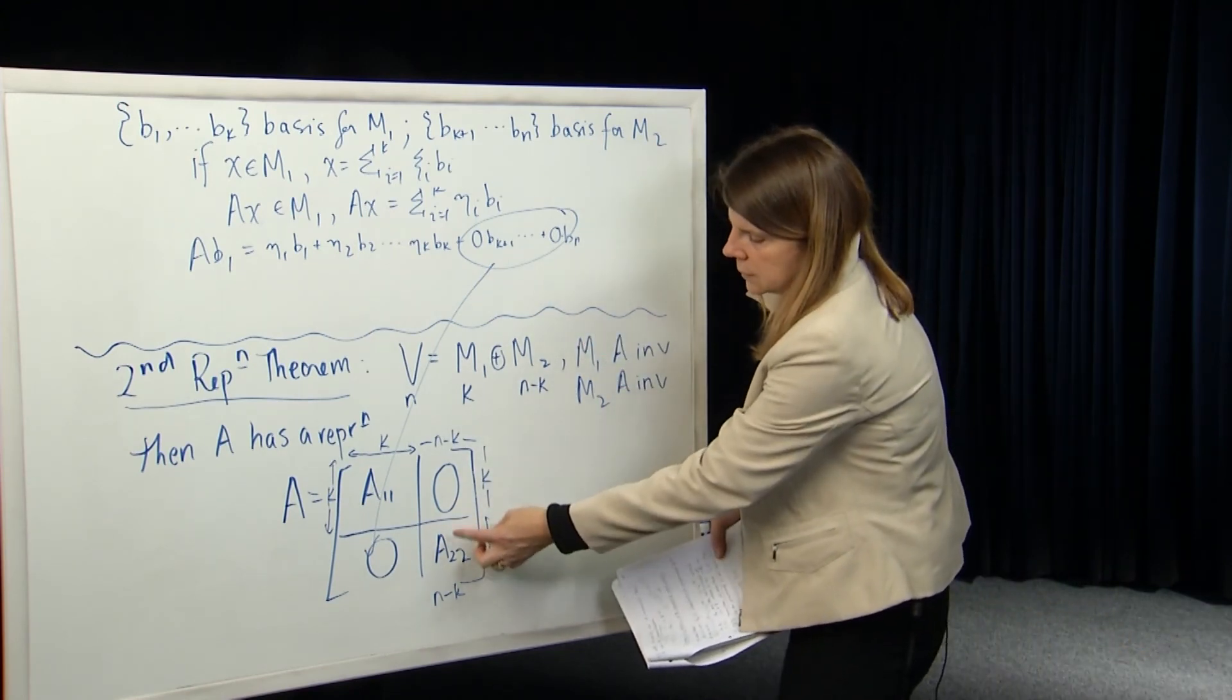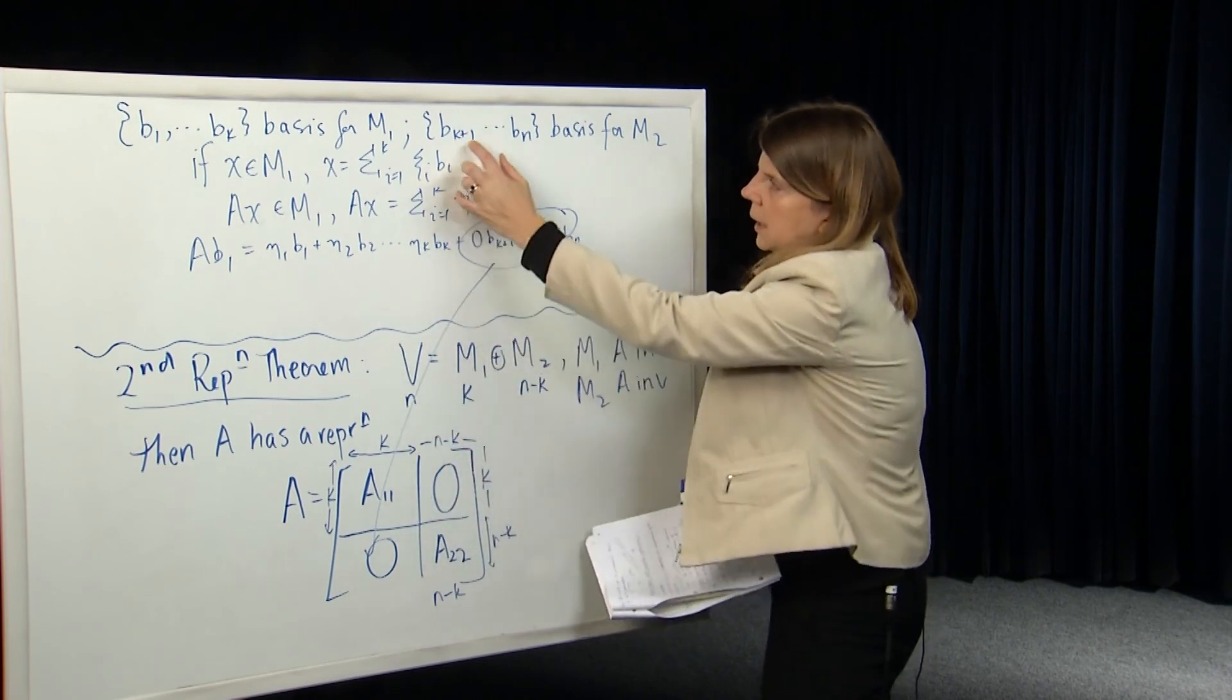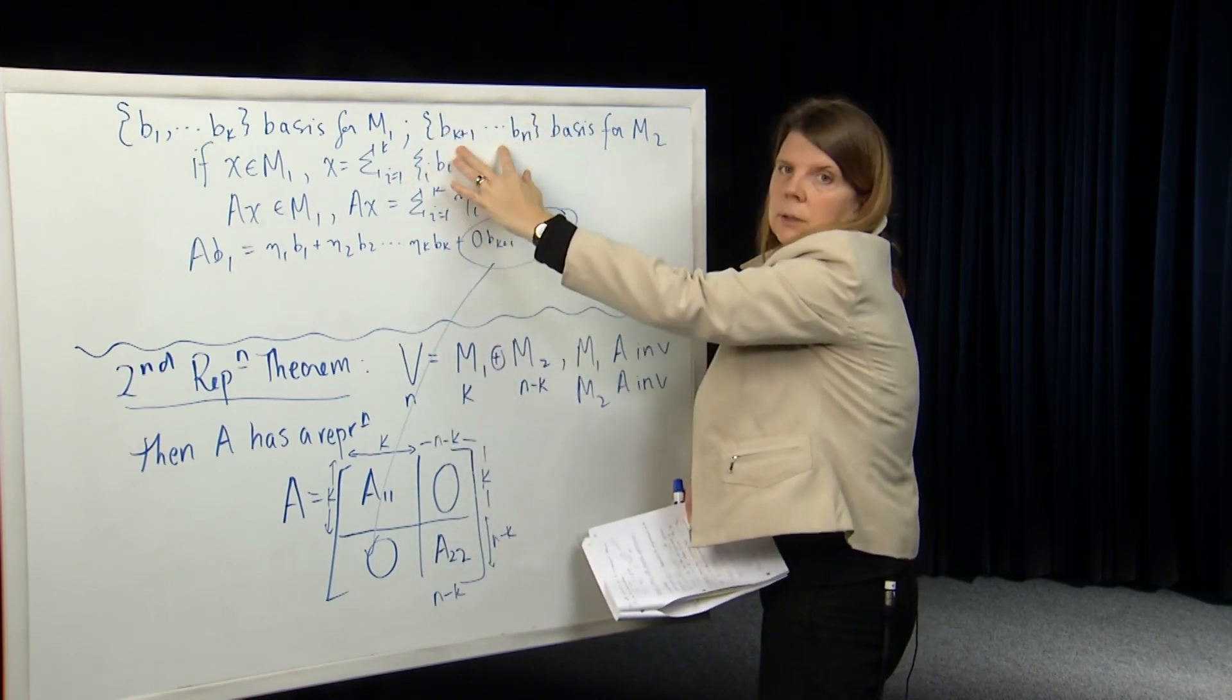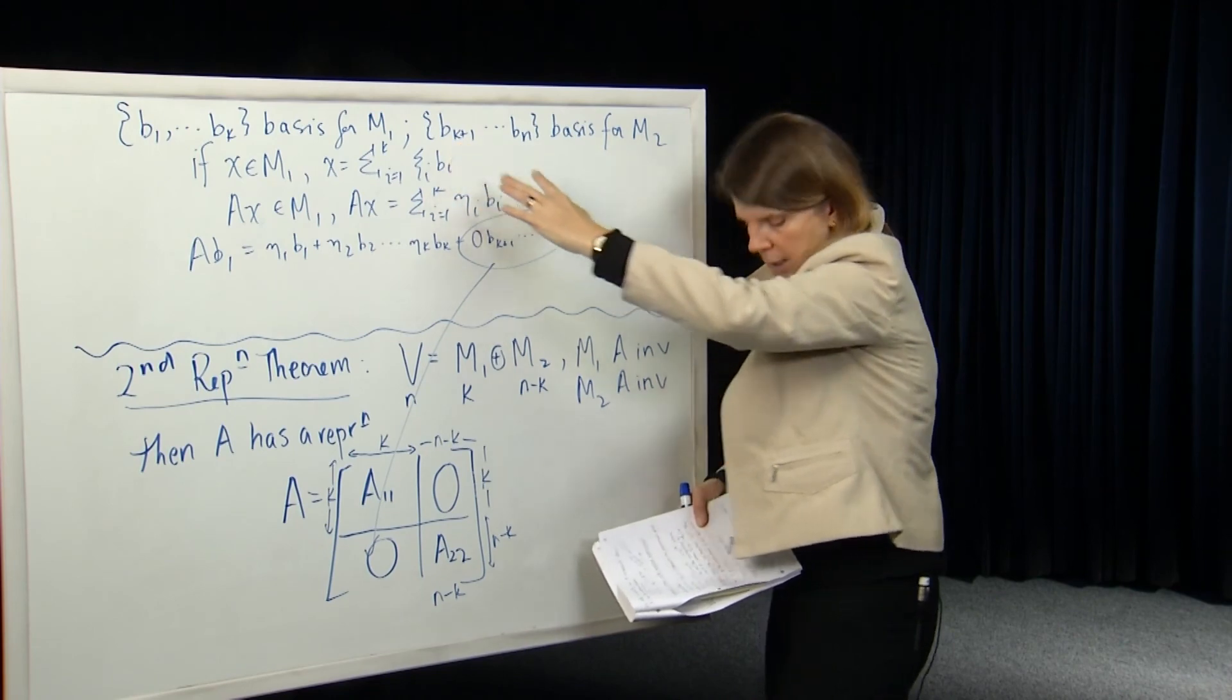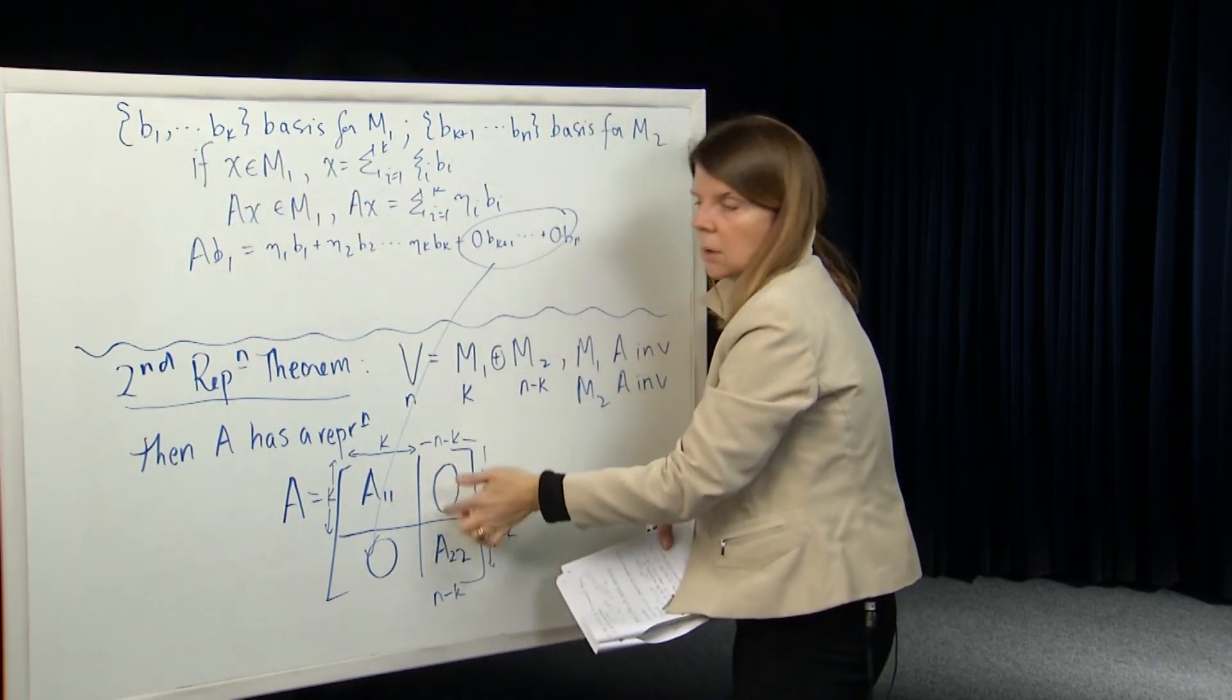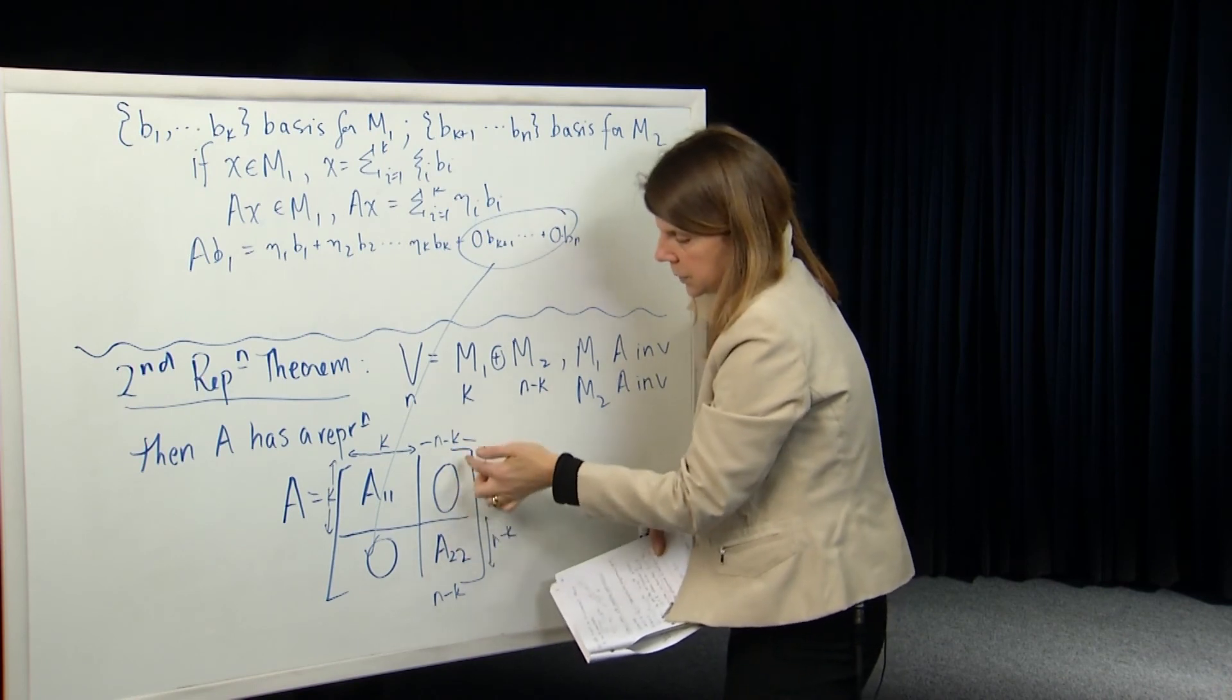If M2 is A invariant, then A of BK plus 1 can be written only in terms of a linear combination of these basis vectors. And the coordinates for the basis vectors which are from M1 are all zeros. So you end up with zeros up here.